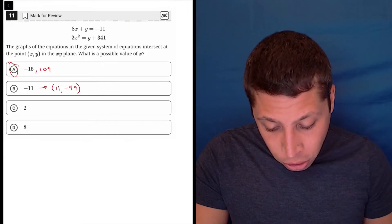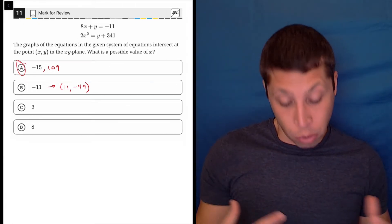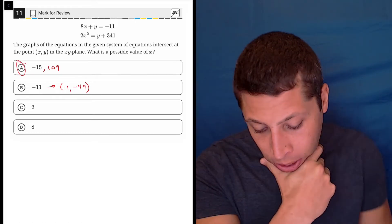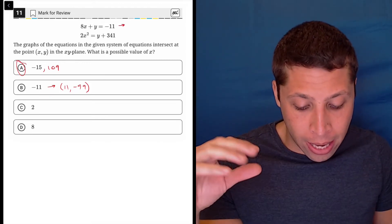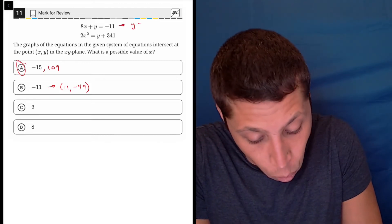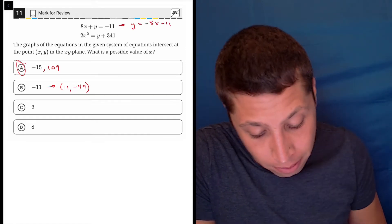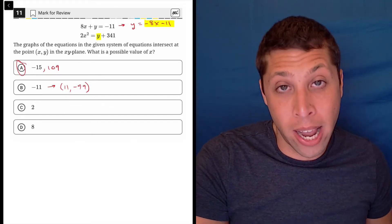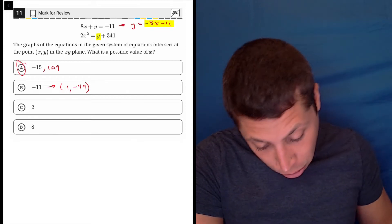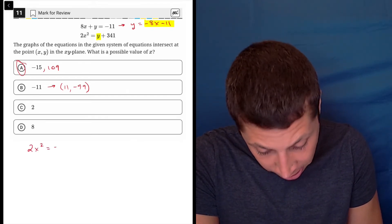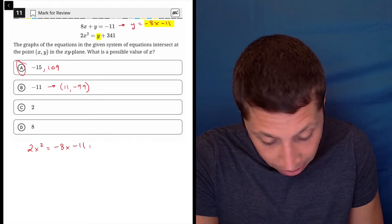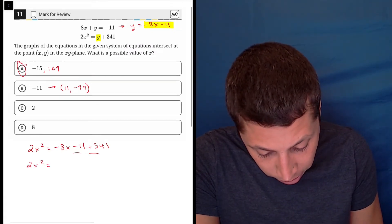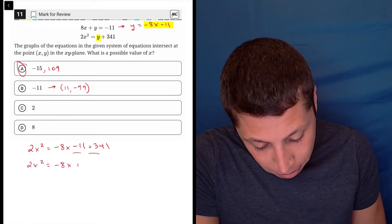So if I wanted to do this algebraically, I would need to merge these two equations and they're not written in a way that really lets me do that easily. So what I would do first is rearrange this top equation by subtracting the 8x to the other side. So I would get y is equal to negative 8x minus 11. That's going to let me substitute this negative 8x minus 11 in for the y that's in the other equation. So using substitution, now I have 2x squared is equal to negative 8x minus 11 plus 341. Let's clean up this. Combine like terms very quickly. 2x squared is negative 8x plus 330.